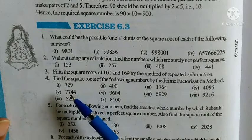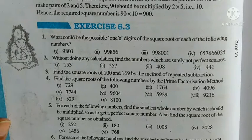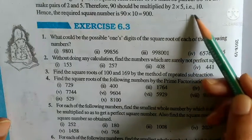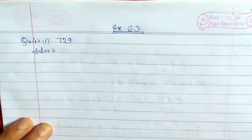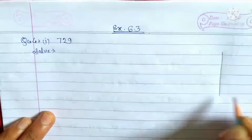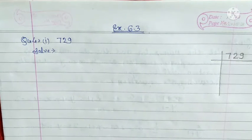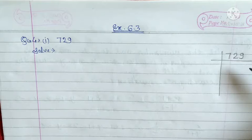The first number is 729. To find the prime factorization, we start with small numbers and check which ones can divide 729.